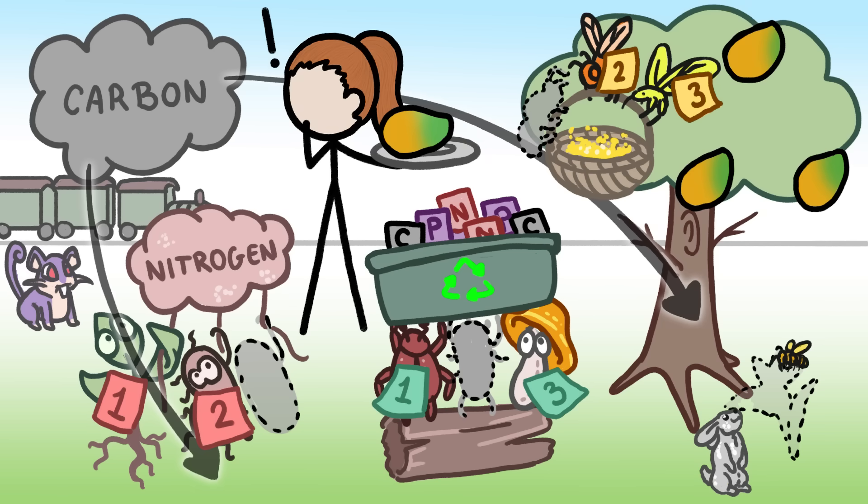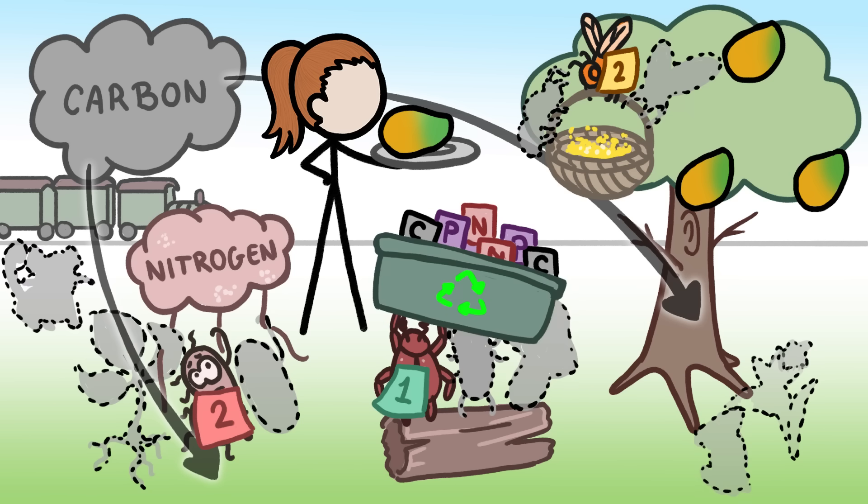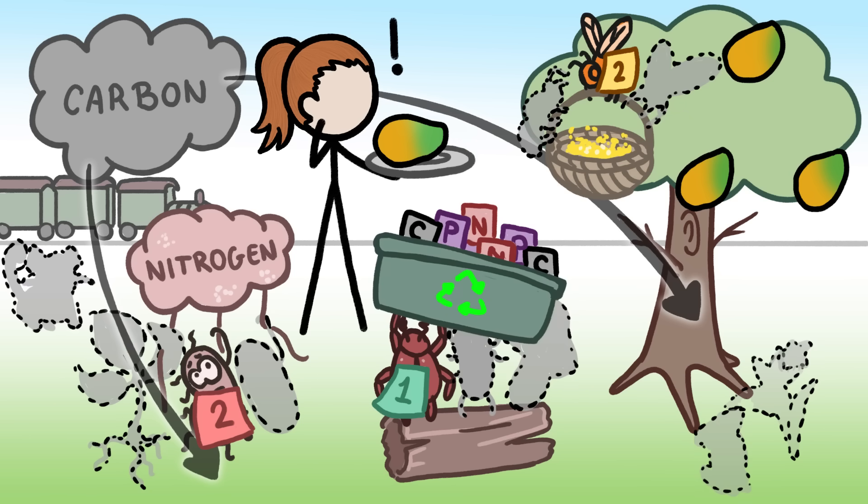But that's also actually a huge problem. Because ecological redundancy can keep ecosystems chugging along, it can keep us from noticing that biodiversity loss is happening. Or even if we do notice, it can trick us into thinking it's no big deal.